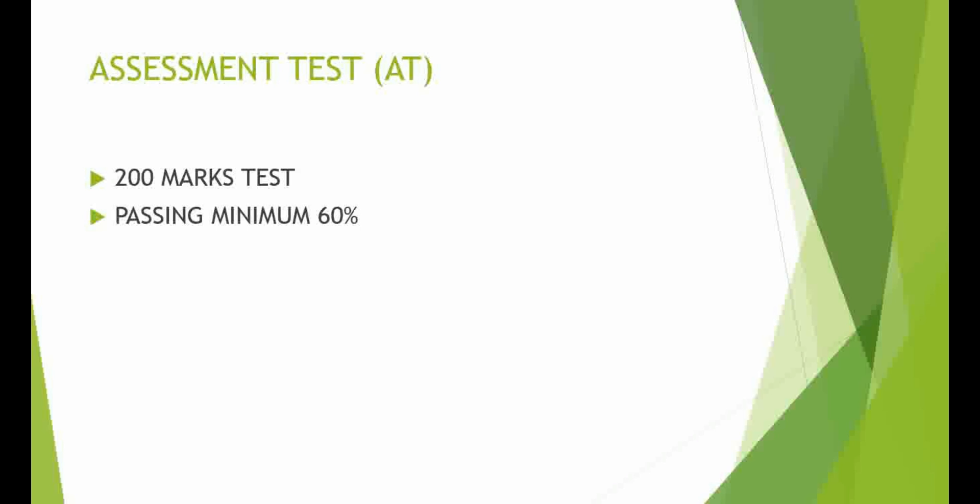After qualifying the eligibility test, you need to appear for the assessment test, which is of 200 marks with a minimum passing percentage of 60%. After you qualify all your exams, you will receive the Diploma in Information Systems Audit.